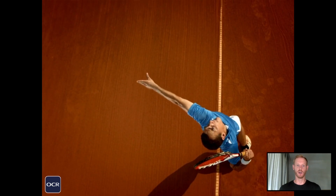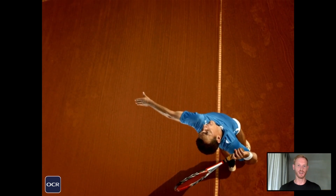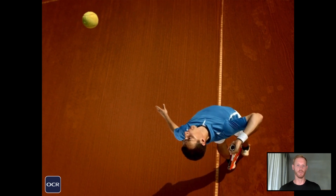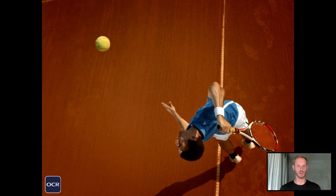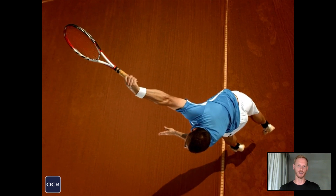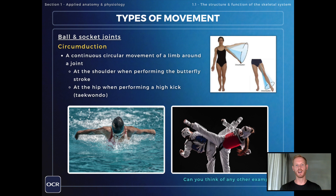The final type of movement to know about is circumduction, which is essentially a combination of all the different types of movement possible at ball and socket joints: flexion, extension, abduction, adduction, and rotation. Circumduction can be defined as a continuous circular movement of a limb around a joint. It occurs at the shoulder when performing the butterfly stroke, bowling in cricket, or serving in tennis, and at the hip joint when performing a high kick in taekwondo.